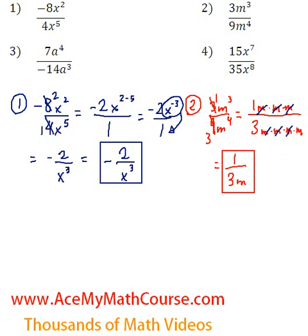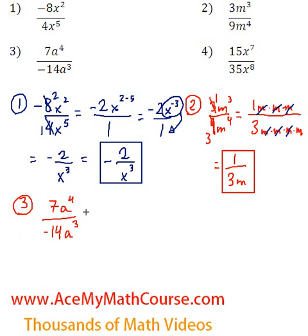So we have 1 over 3m. And question 3: we have 7a to the power of 4 over negative 14a to the power of 3.